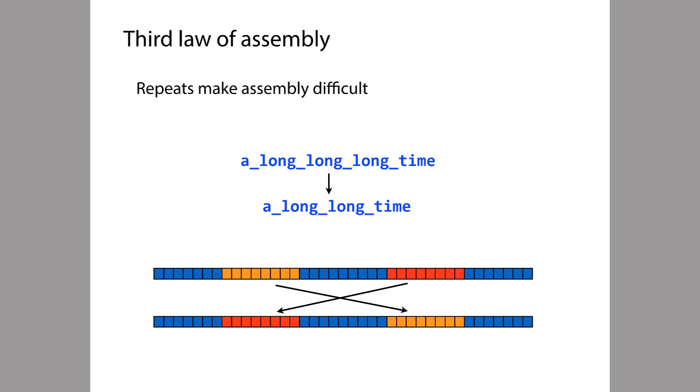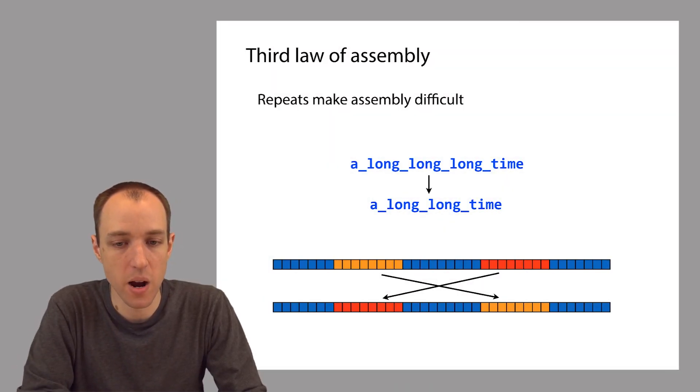This is our first encounter with what is probably the single most important issue that makes the assembly problem difficult in practice. Repetitive sequences can make it difficult or even impossible to correctly assemble the original genome. Repetitive sequences cause ambiguity — just like repeated pieces make a puzzle difficult to assemble. When the genome is repetitive, our attempts to assemble it will fail in some way, and how we fail depends on the particular algorithm we're using.